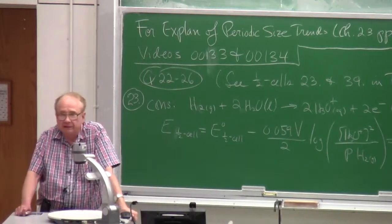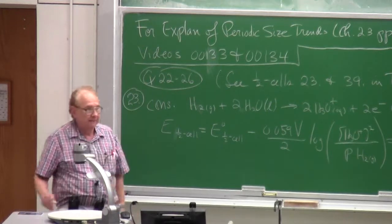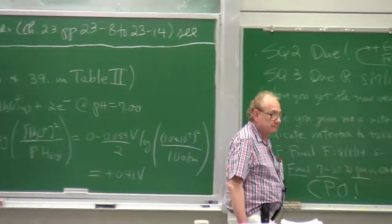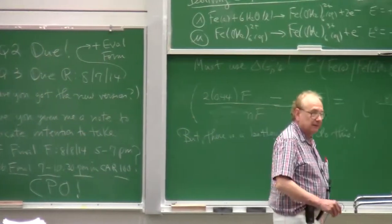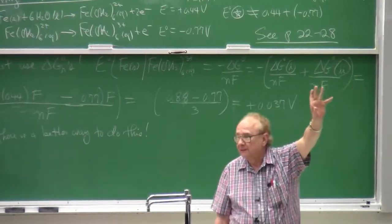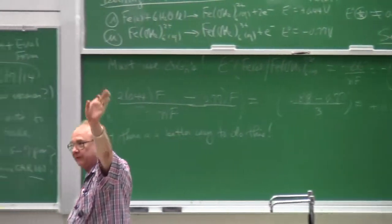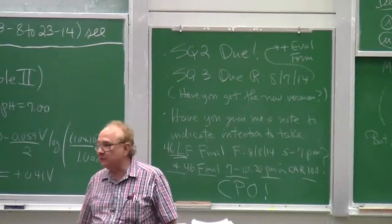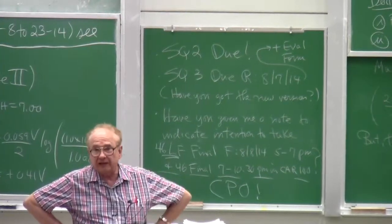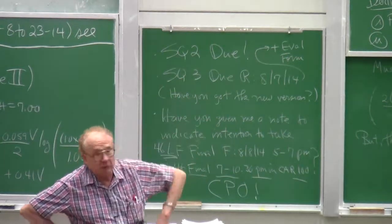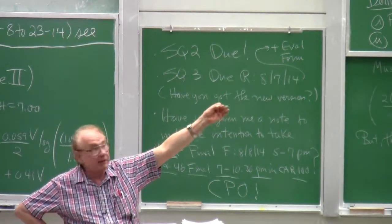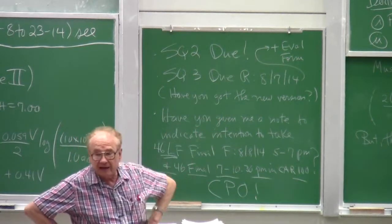In the videos you will find explanation and analysis of periodic size trends. At least for A family atoms, as we go left or right across a period, the general size trend for atoms is that they get progressively smaller - usually not substantially so as you go from atom to atom. But when you go across period two with eight elemental members, by the time you go through small size shrink after small size shrink, you find that a neon atom is a lot smaller than a lithium atom. Period three, an argon atom is a lot smaller than a sodium atom.